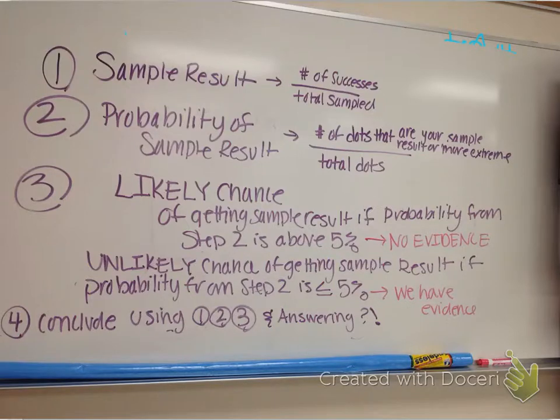Step two, you need to find the probability of getting that sample result. That's where you go to the dot plot. You have to find the number of dots that are your sample result or more extreme than that. You then need to divide it over the total dots. You can leave it as a decimal or change it to a percentage.